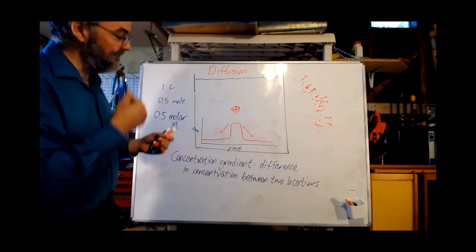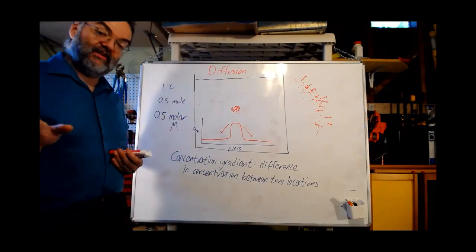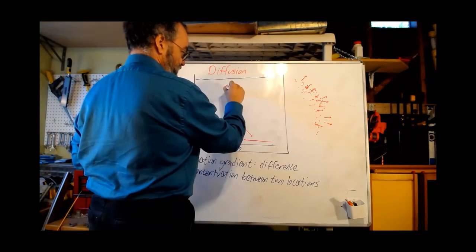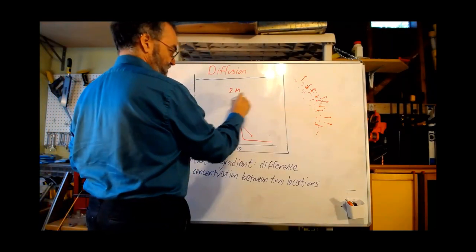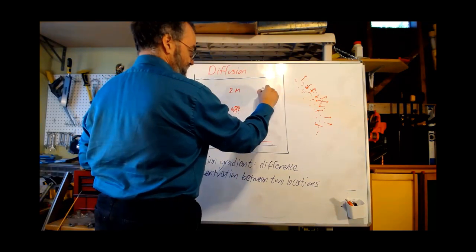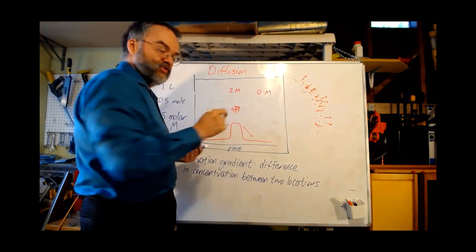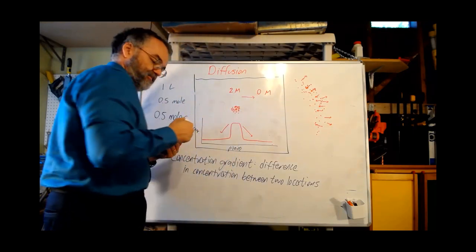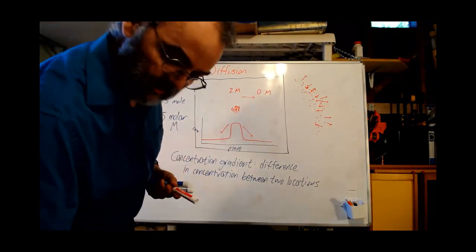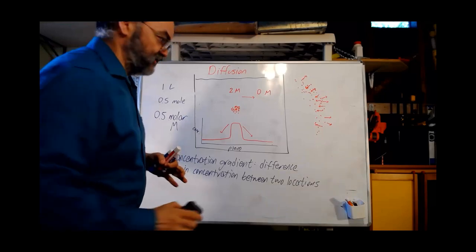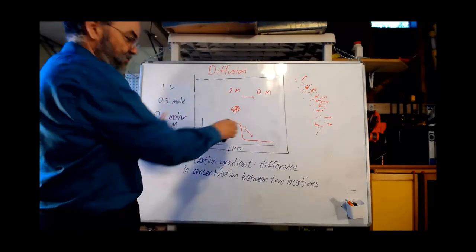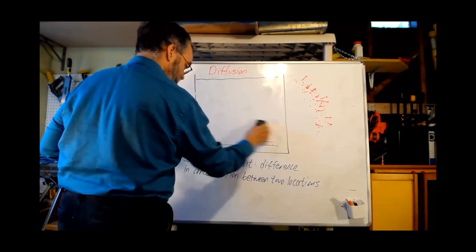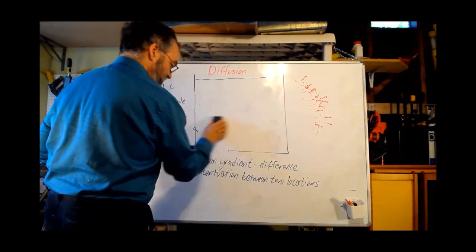We can put numbers on this. If the concentration is 2 molar here and 0 molar out there, then diffusion says that overall the movement will be outward. Let's look at another example. Imagine a bucket divided by a barrier in the middle.